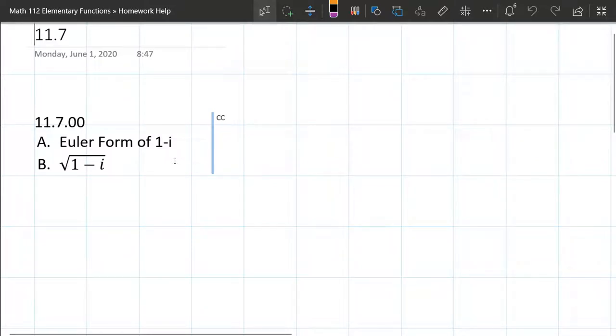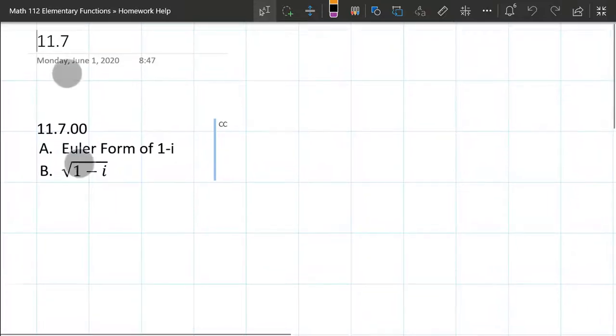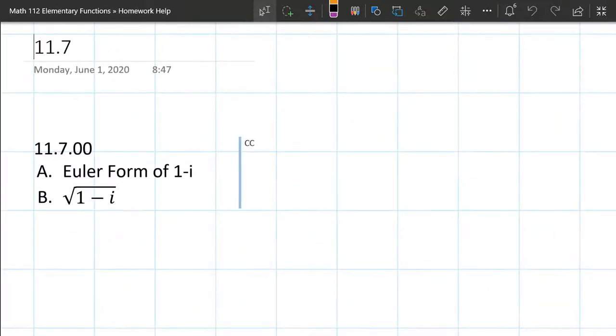We're going to look at Euler form of complex numbers. If you read your textbook or a lot of the videos online, they use the cosine i sine. So I'm going to start by writing that out. A lot of people call it CSIS form, which stands for cosine i sine.